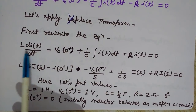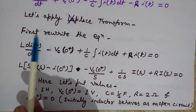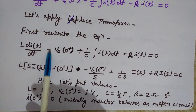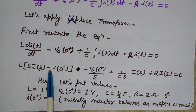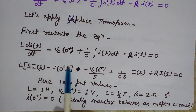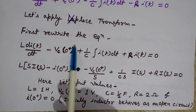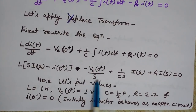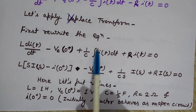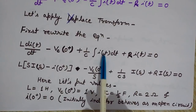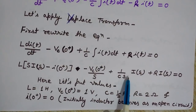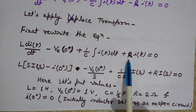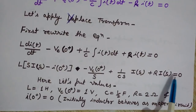The Laplace transform of L·dI(T)/dt uses the derivative formula: L is outside, and the Laplace transform of dI/dt is S·I(S) minus I(0+). For the constant term V_C(0+), its Laplace transform is V_C(0+)/S — a constant divided by S. For the integral ∫I(T)dt, the Laplace transform is I(S)/S. The term 1/C is kept as is, and R·I(T) transforms to R·I(S). So R·I(S) equals 0.